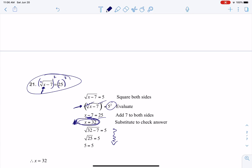So here you see me checking that it worked in the original problem, right? I put 32 in for x, 32 minus 7 is 25 and the square root of 25 is 5 so that checked out. So I actually get to keep my solution for this particular problem.